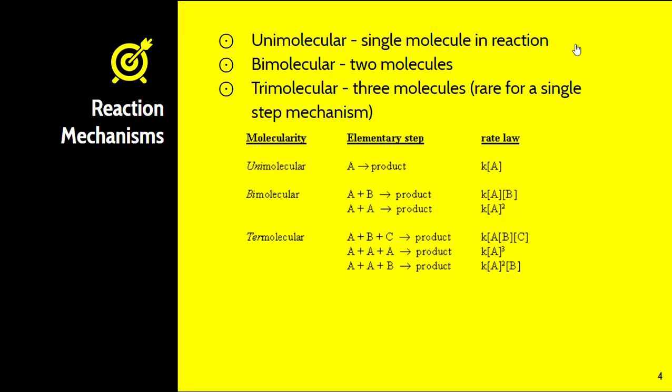We call these mechanisms specific names based on the number of molecules in the reactant part of the reaction. Unimolecular involves a single molecule forming a product, bimolecular involves two molecules, and trimolecular involves three. These apply to elementary steps. Trimolecular is very rare for a single-step mechanism because interesting kinetics must take place for that to happen.